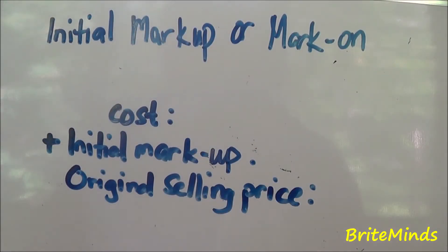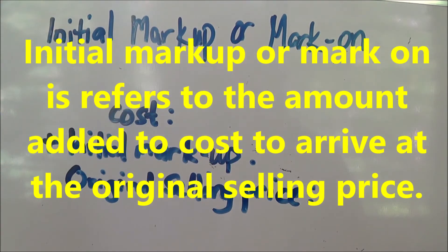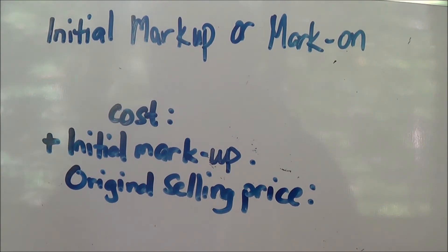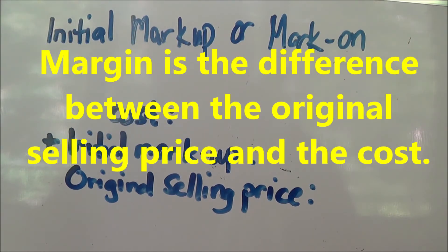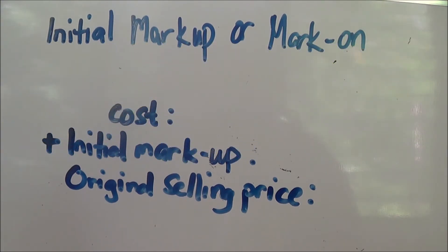Initial mark-up, or mark-on, refers to the amount added to cost to arrive at the original selling price. Initial mark-up or mark-on is sometimes referred to as margin. Margin is defined as the difference between the original selling price and the cost.